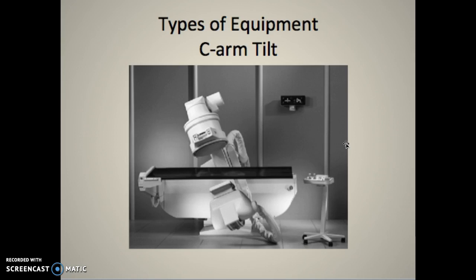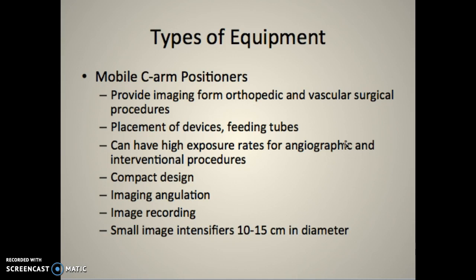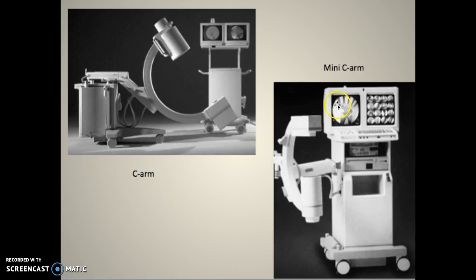Mobile C-arms provide imaging for orthopedic and vascular work, placement of devices and feeding tubes. They're great for angiographic or interventional work with a nice compact design. You can angle, record, and the image intensifier is 10 to 15 cm in diameter, which we'll cover next week. Here's a regular C-arm and a mini C-arm - you can see how small it is. The mini C-arm is great for small ortho work like feet, ankles, wrists, and hands, but not for larger body parts where you need a full C-arm.